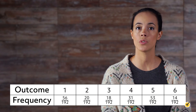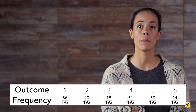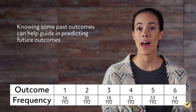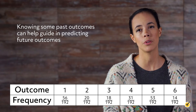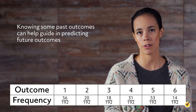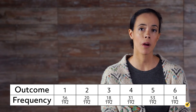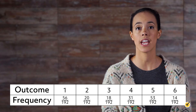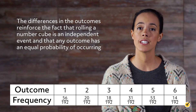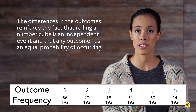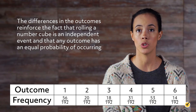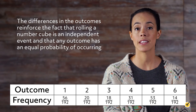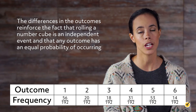Combining the results of the two experiments might lead to a third way of thinking. This emphasizes the use of empirical probability as simply a gauge. Knowing some past outcomes can help guide in predicting future outcomes. Again, empirical probabilities are just estimates. In this case, the differences in the outcomes reinforce the fact that rolling a number cube is an independent event and that any outcome has an equal probability of occurring.